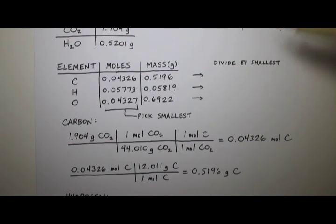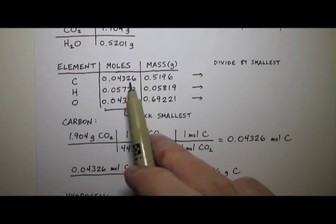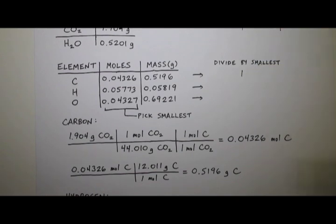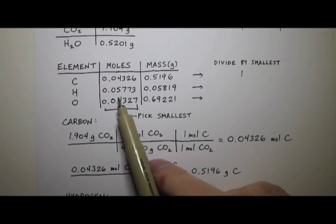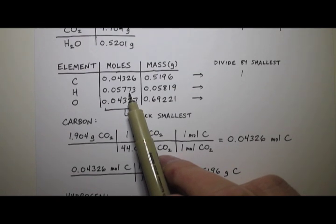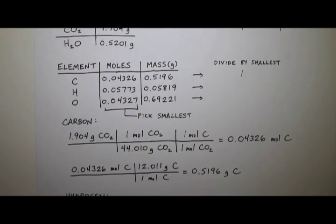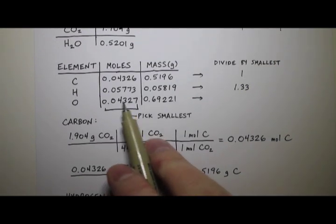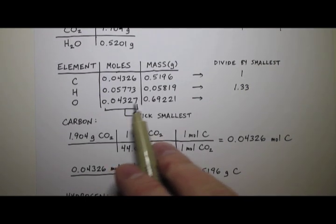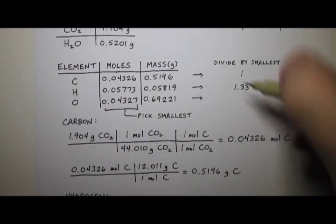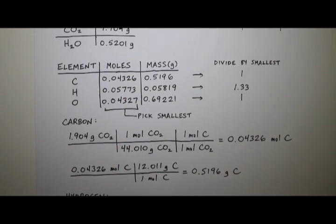All right. Well, 0.04326 divided by 0.04326 is 1. 0.05773 divided by 0.04326 is 1.33. And then this is also just about 1. Because, you know, 0.04326, 0.04327, about the same thing. So that's pretty much 1.